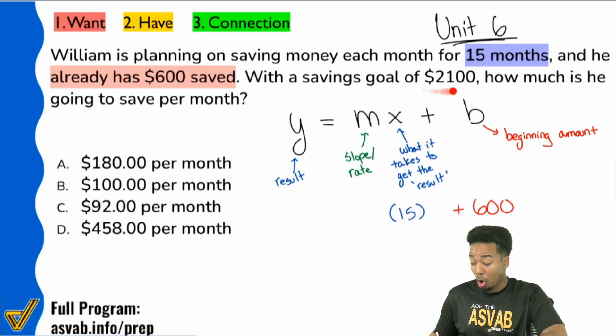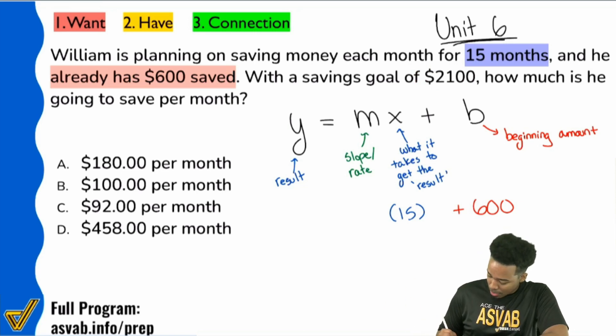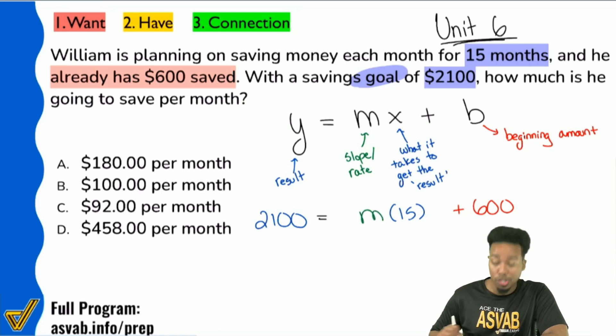Then with a savings goal of $2,100. Everybody, if the goal is $2,100, where does that belong? That's the result. That's what we're trying to end up at. That's the ending amount. That's going to be right there, $2,100. That is the goal. Boom. $2,100. So what we are looking for, everybody, is the slope. It's the rate.